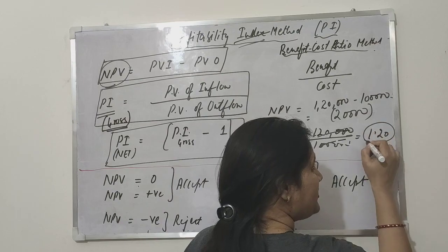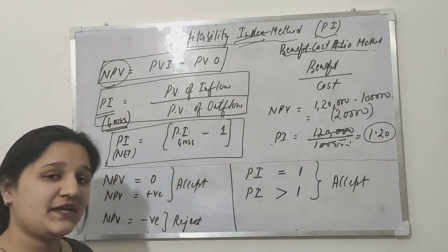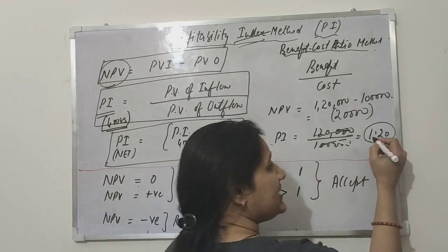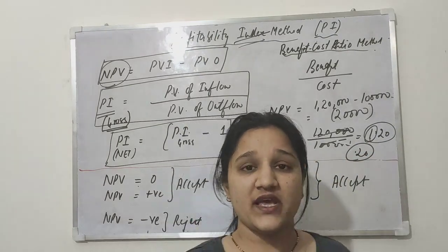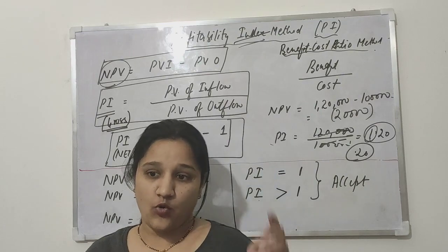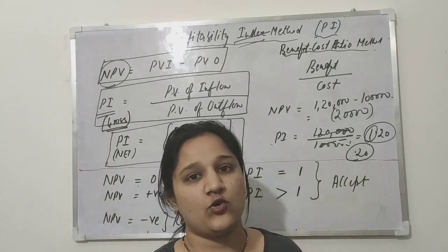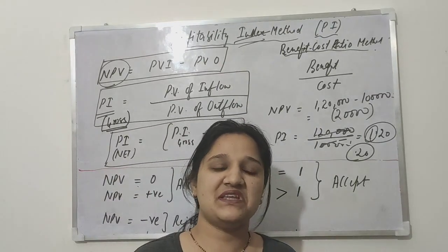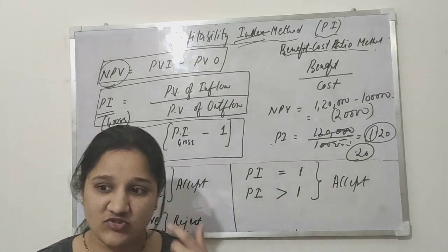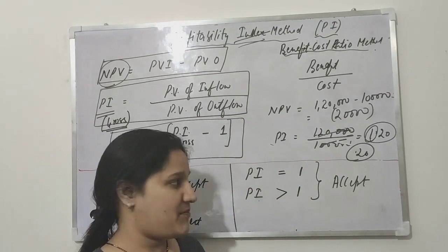What is the interpretation of this 1.20? It means the company will earn 20 paisa per rupee invested. If company invests one rupee, it will get 20 paisa profit. In the above case, it was investing 1 rupee and getting 1 rupee back. But if it was 80,000, it means company is in negative position - it invested money but didn't even get that back.